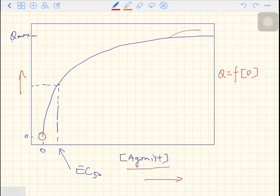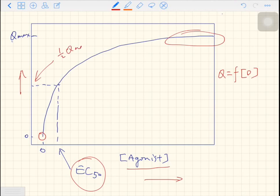However, the response will reach a plateau when the concentration of agonist is high enough. And there is an EC50. EC50 is the effective concentration of the agonist that can cause 50% of the Qmax. So here is half of the Qmax.